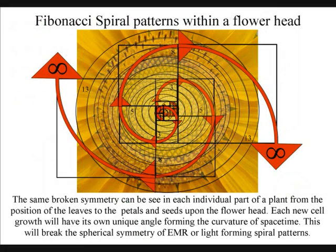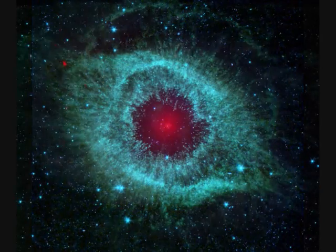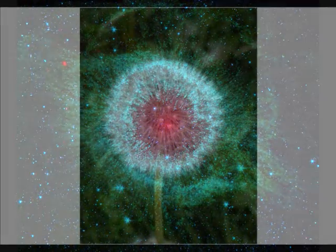The same broken symmetry can be seen in each individual part of a plant, from the position of the leaves to the petals and seeds upon the flower head. Each new cell growth will have its own unique angle, forming the curvature of space-time. Therefore, we see the same patterns in plant life as we do in deep space, formed by the same universal geometry.